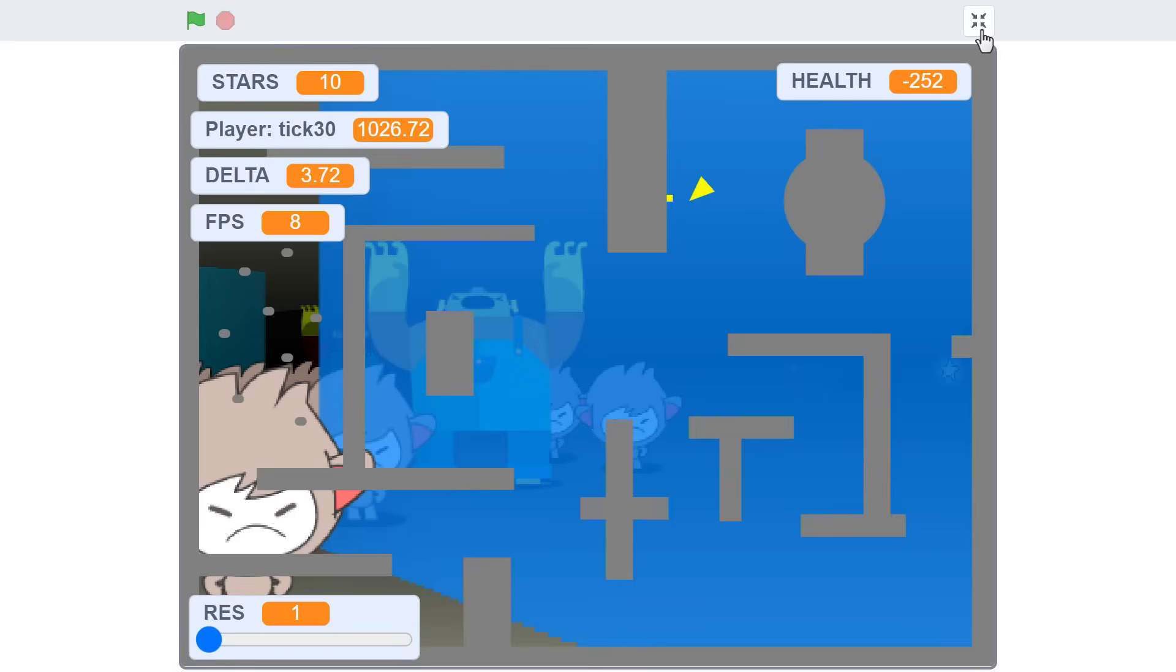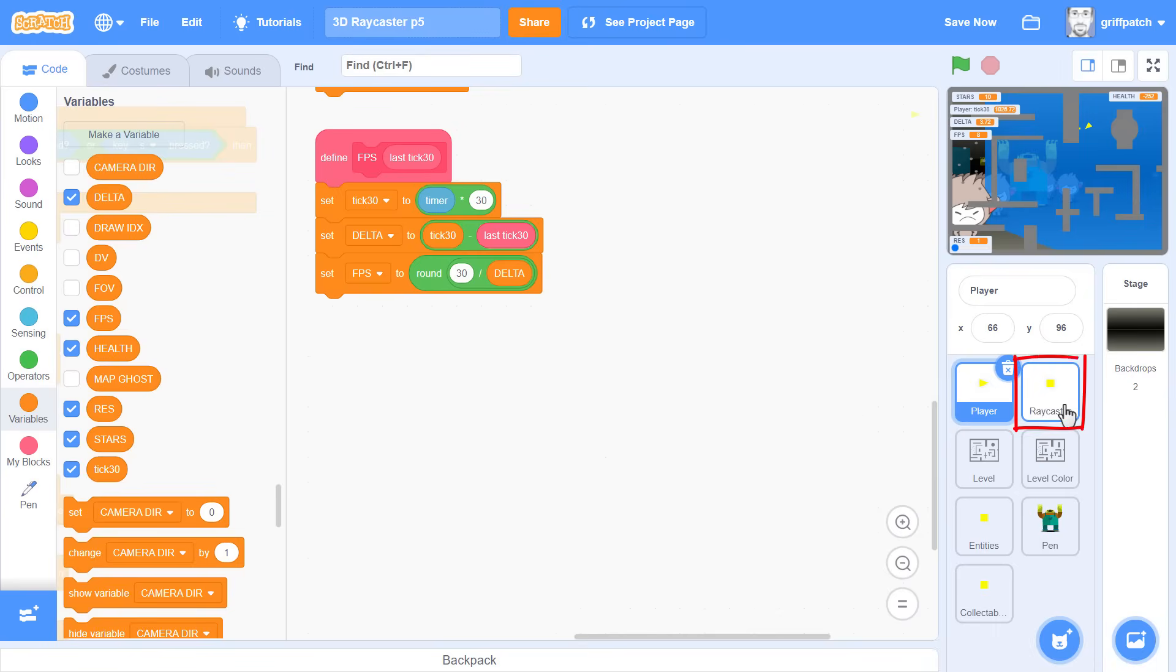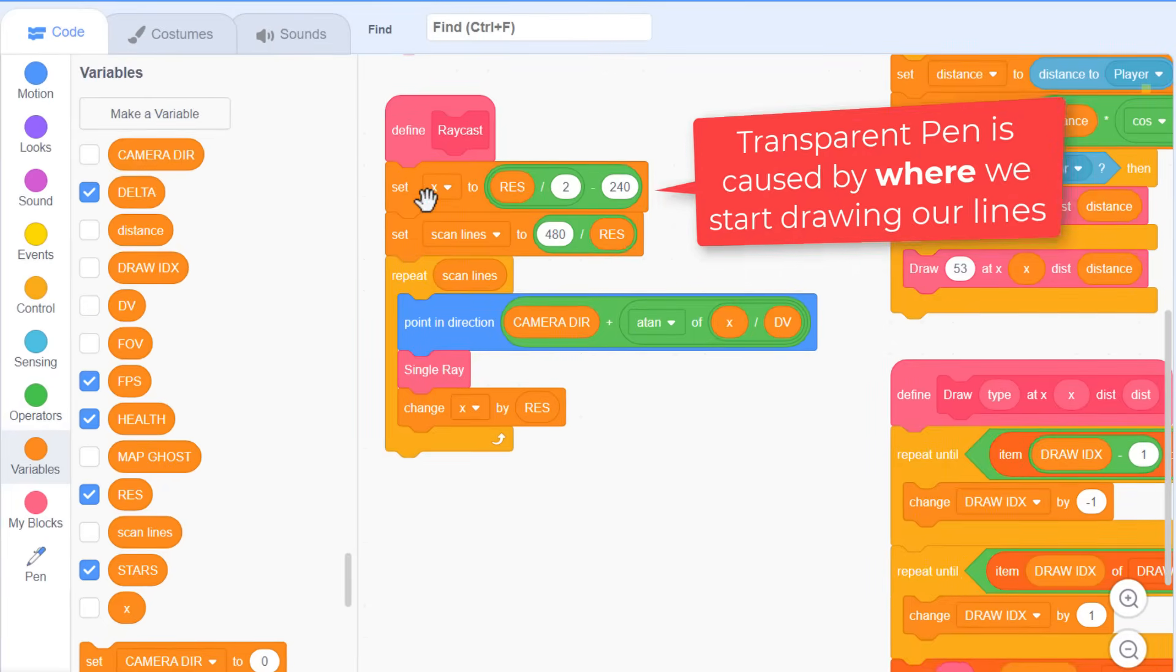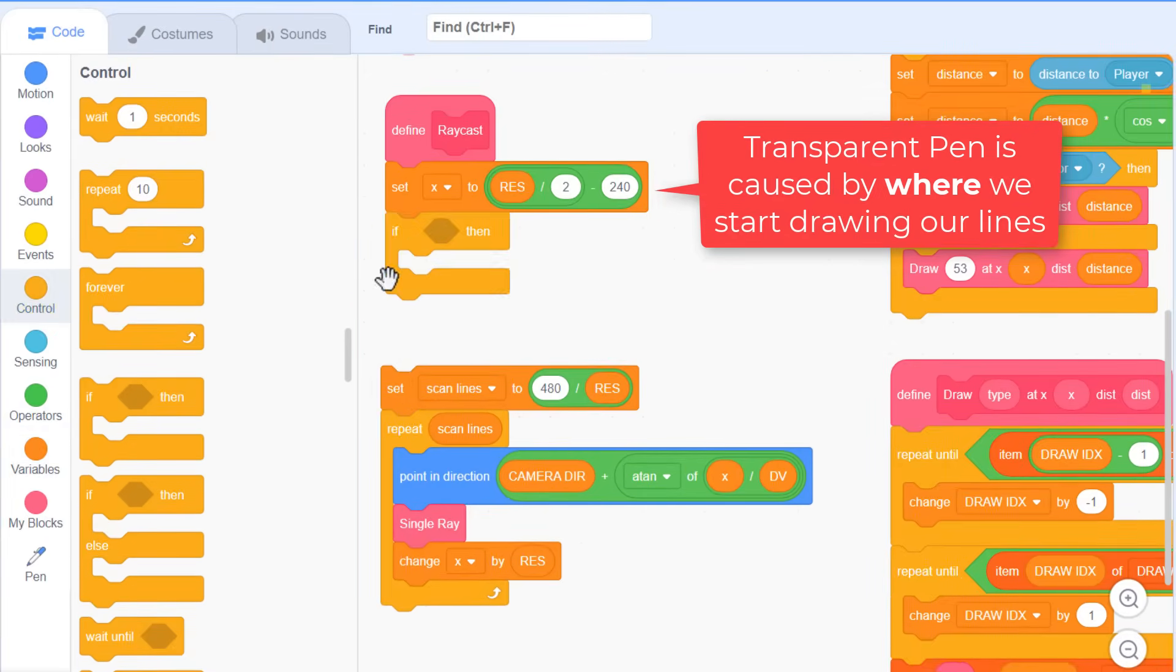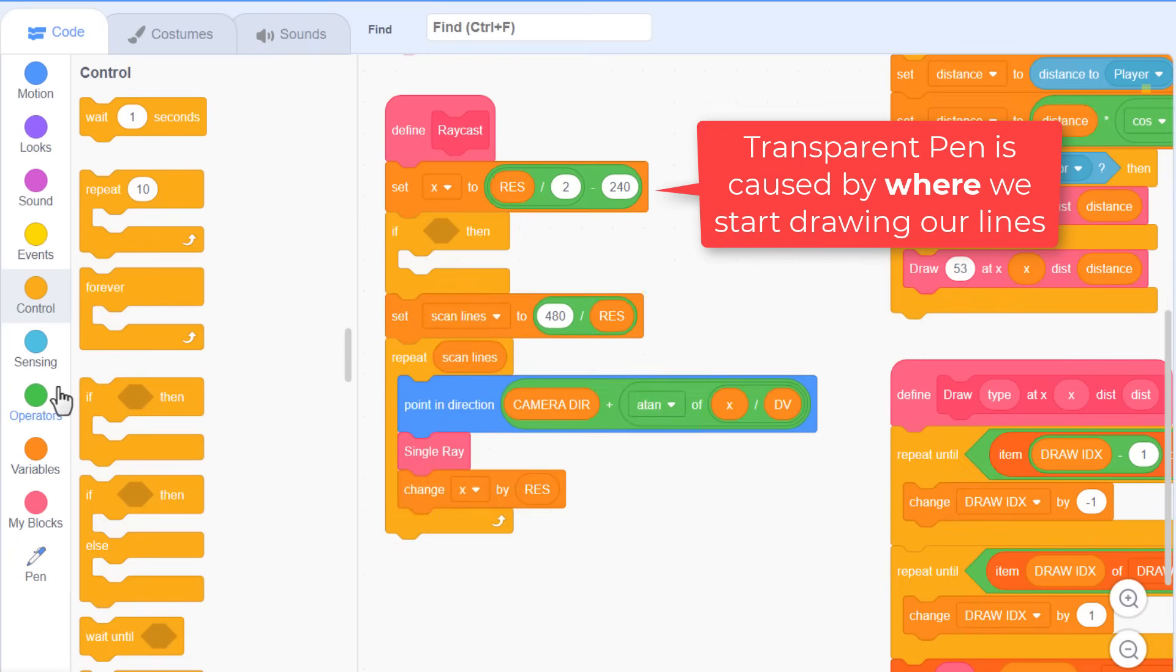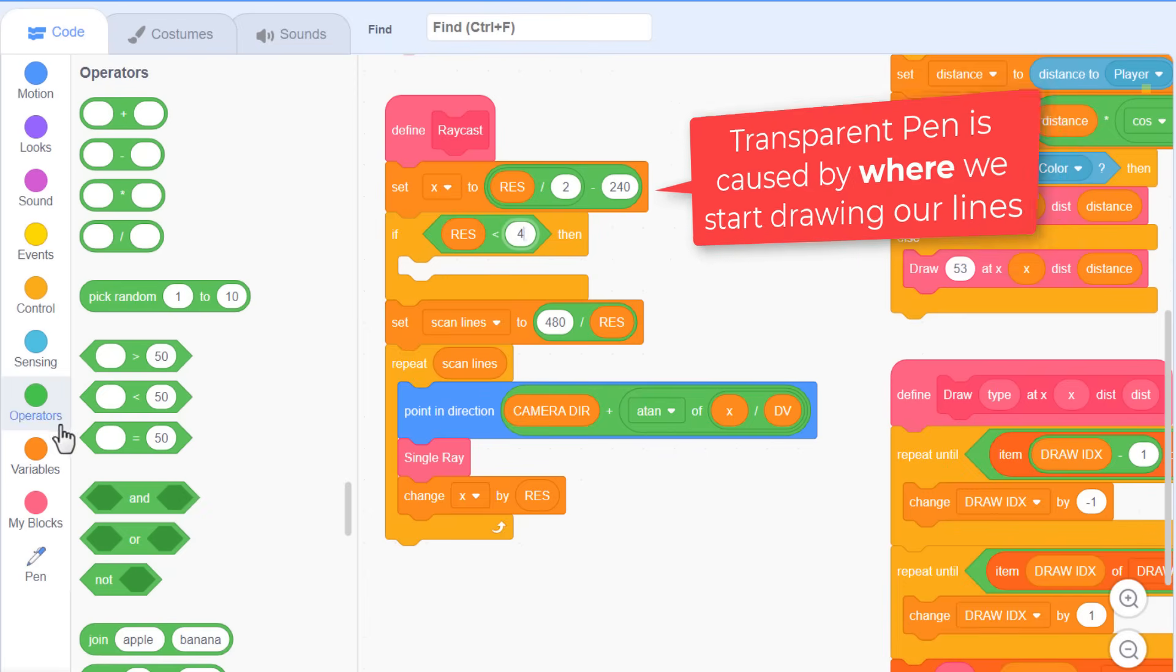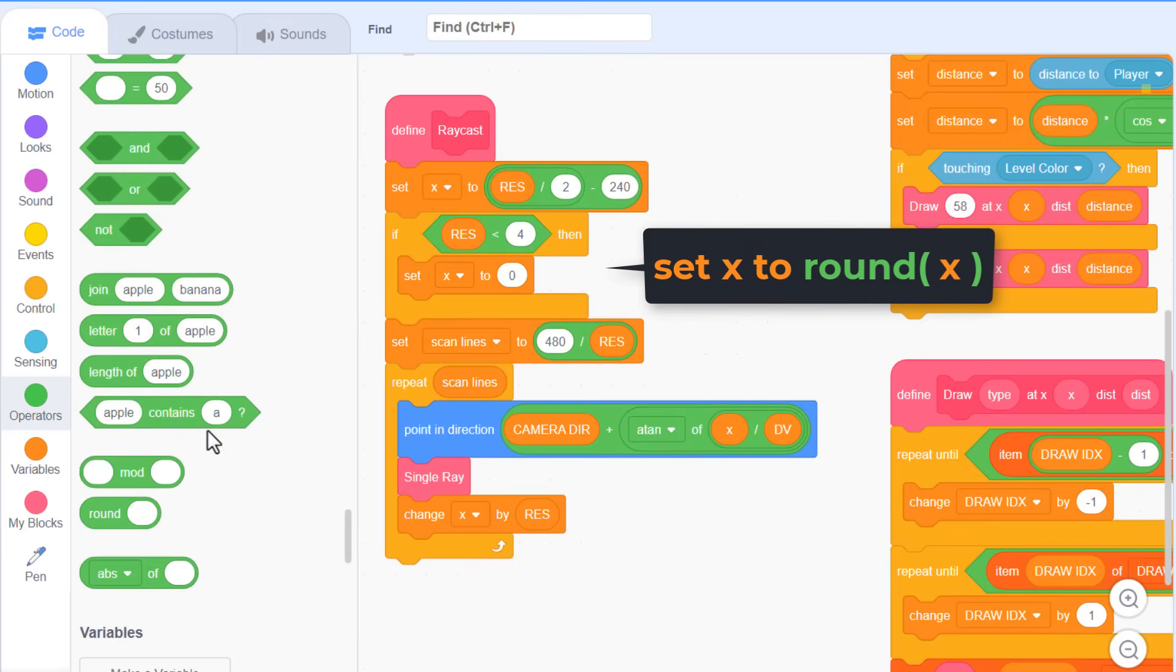It's caused by a quirk of the pen extension, and luckily there is a quick fix. Come into the raycaster sprite, and find the define raycast script. It's all to do with where we begin our first vertical line, this x value. The glitch occurs at pen widths less than 4. In these cases, we must begin drawing at only whole numbers of x. So, if res is less than 4, set x to the round of x.